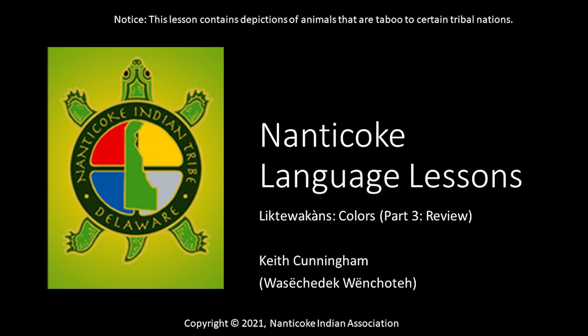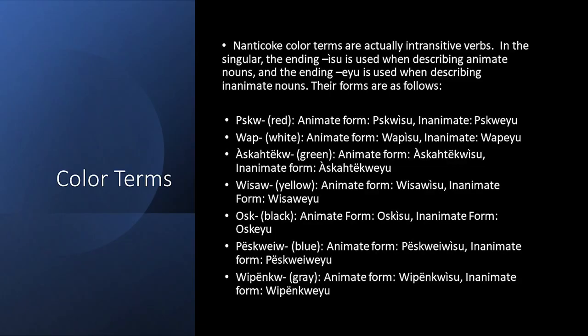Welcome to another edition of Nanticoke Language Lessons. Today we will be reviewing color terms — liktowakkans. Nanticoke color terms are actually intransitive verbs. In the singular, the ending -ul is used when describing animate nouns. The ending -eiu is used when describing inanimate nouns. Below, we'll go over the color terms we introduced in the previous two lessons.